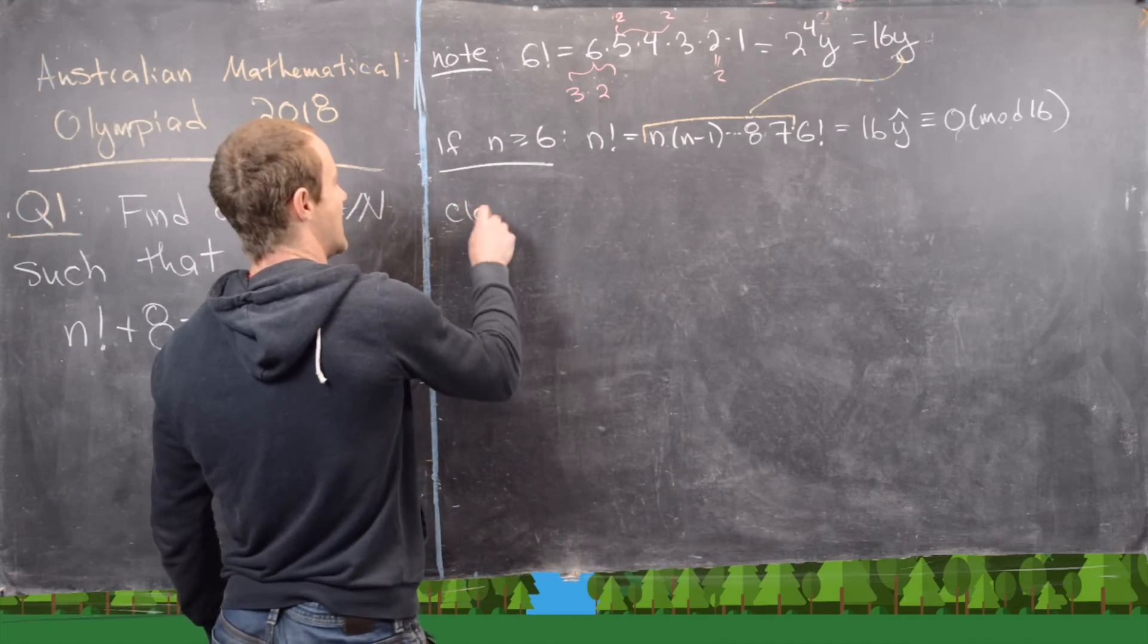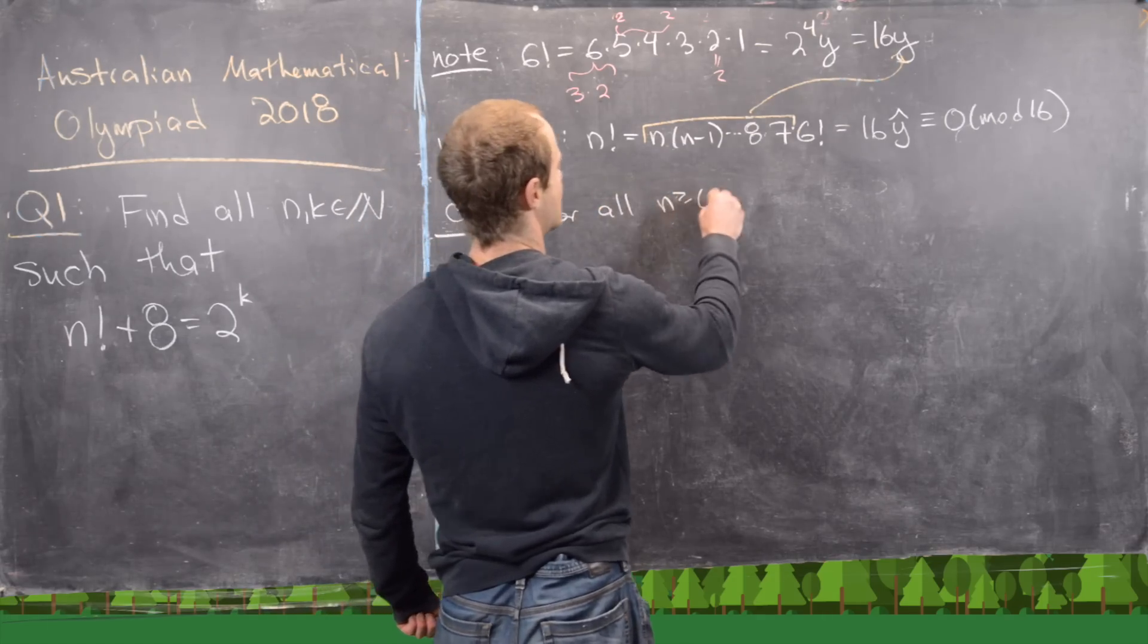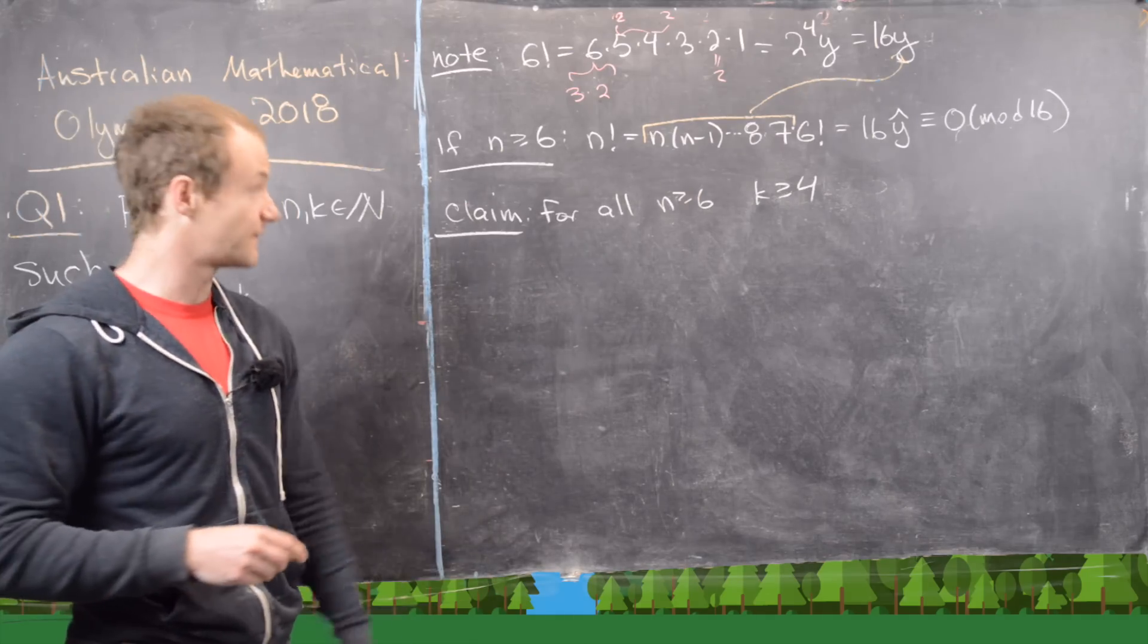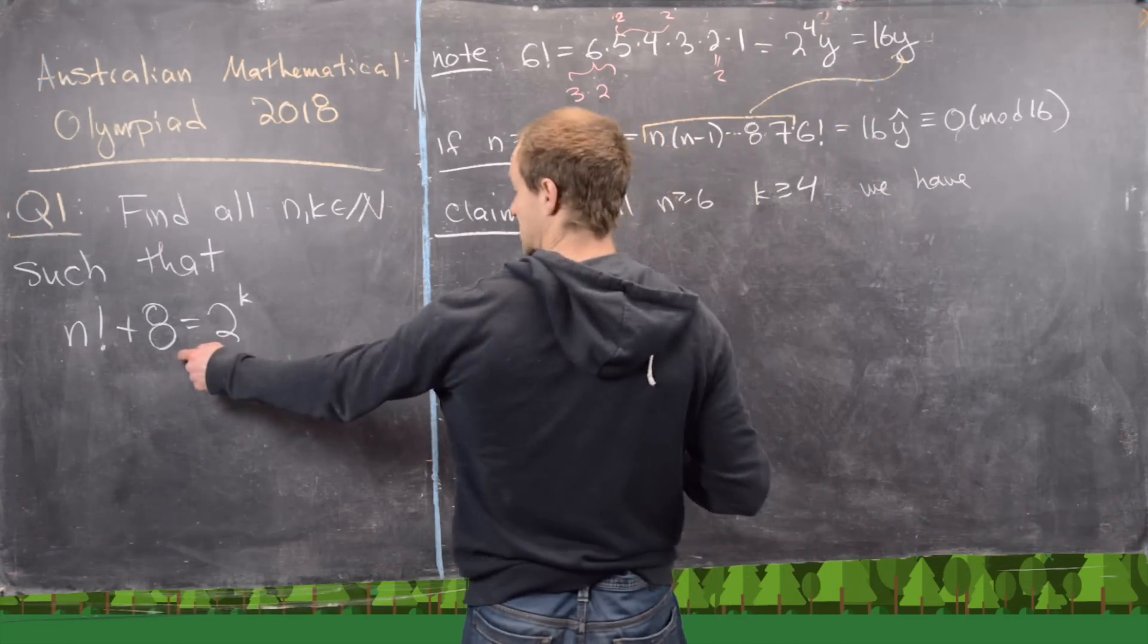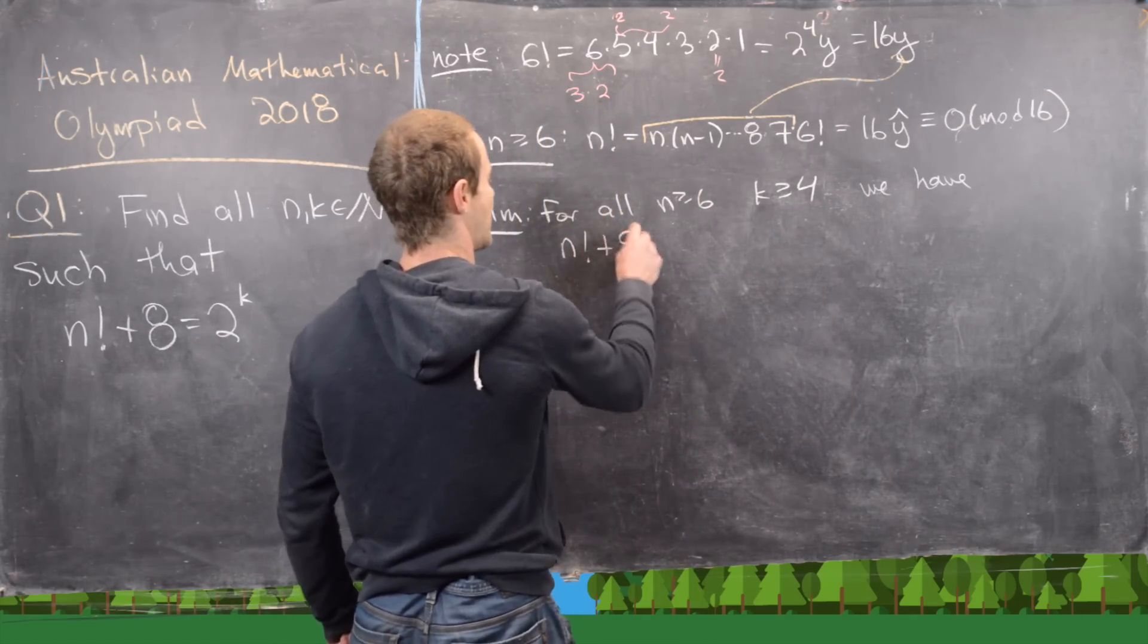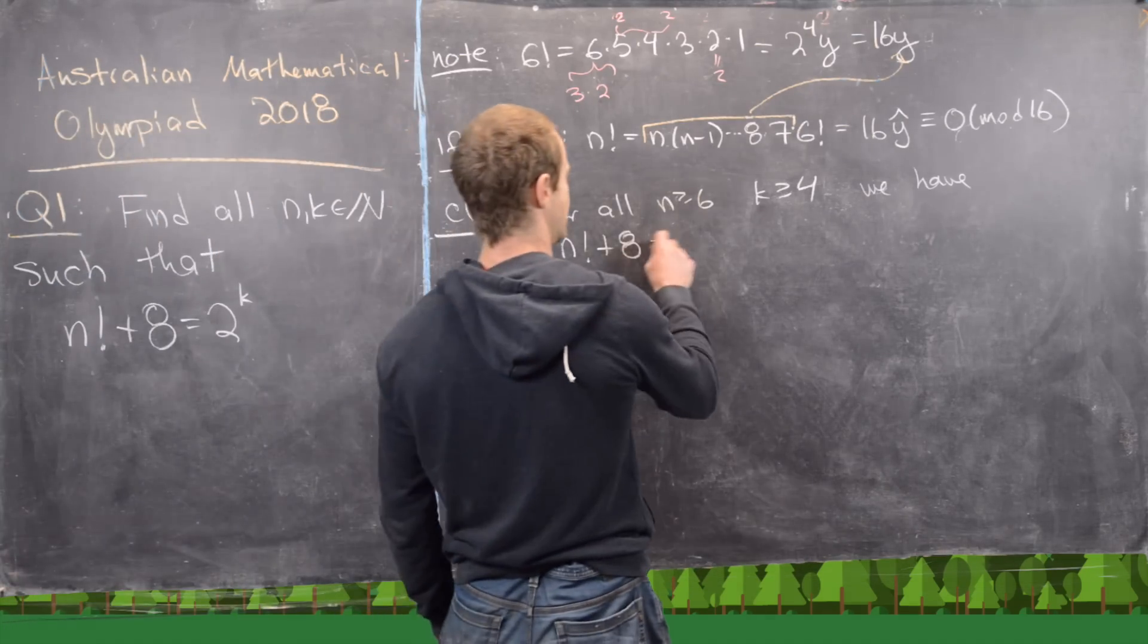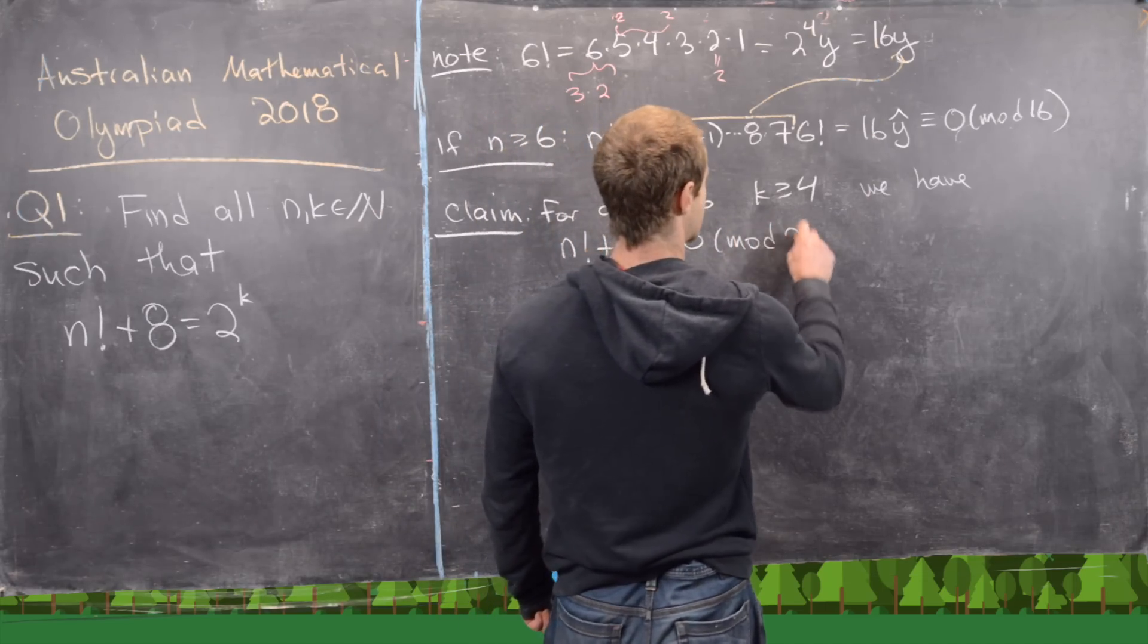So the next thing that we want to claim is that for all n bigger than or equal to 6, and k bigger than or equal to 4, because notice 16 is k equals 4, we have this object in question, n factorial plus 8, not only is it not equal to 2 to the k, but it's not even a multiple of 2 to the k. So this is not congruent to 0 mod 2 to the k.